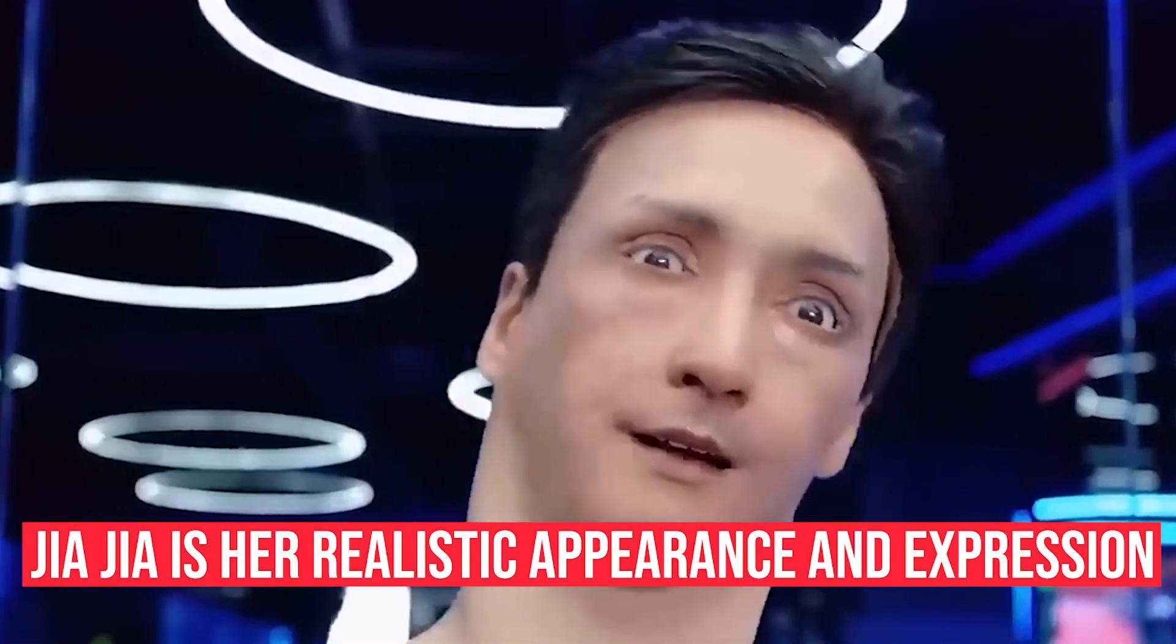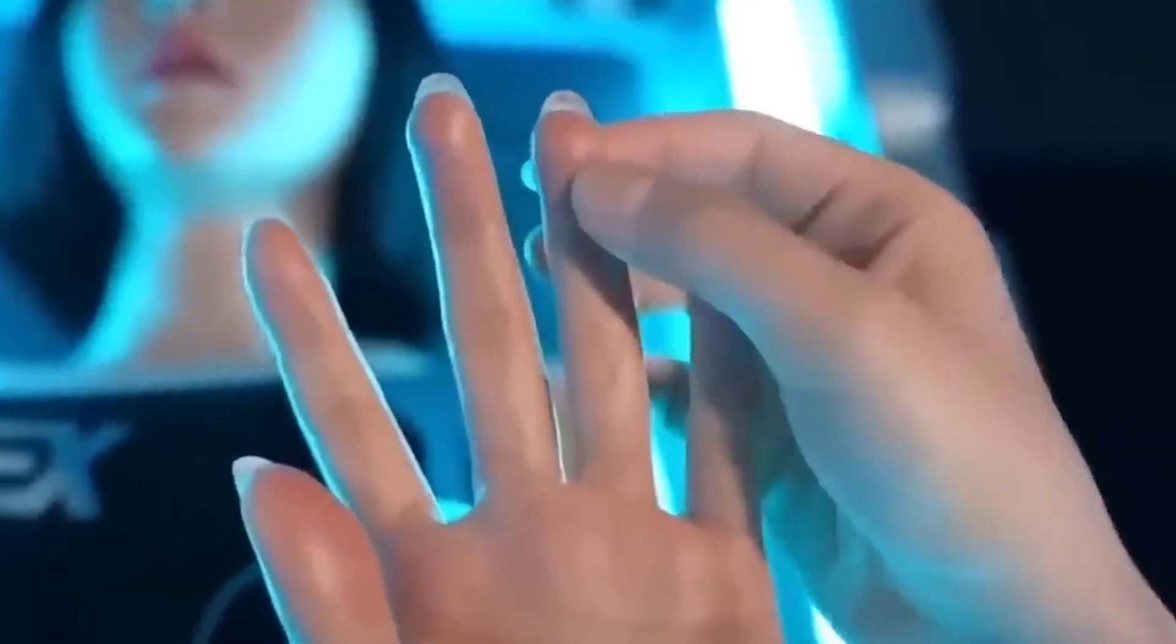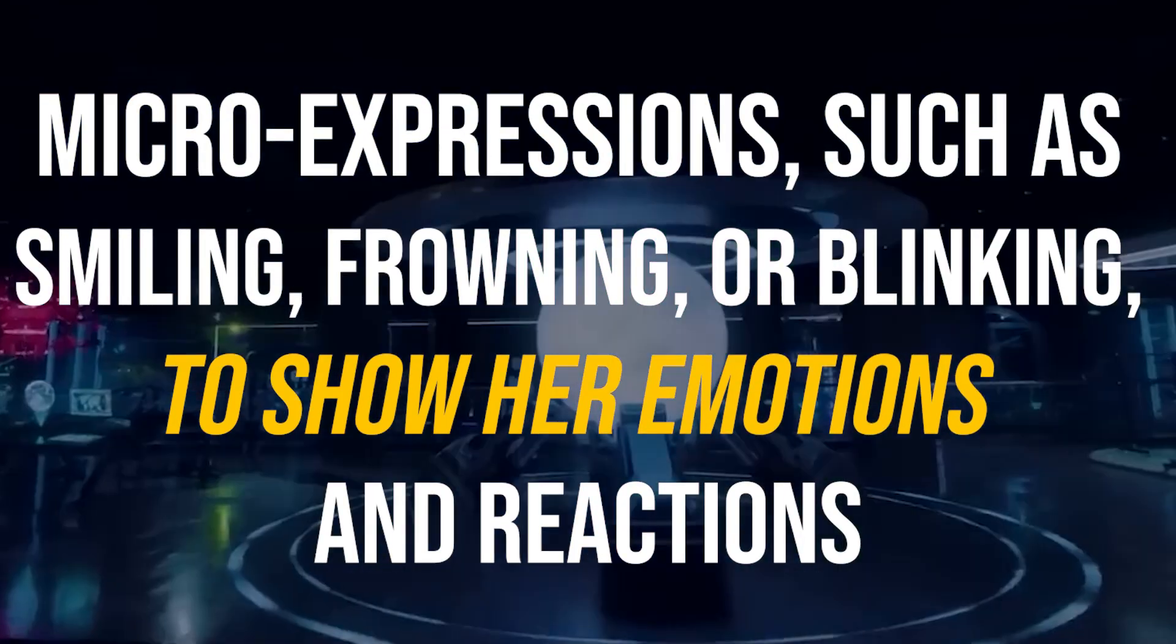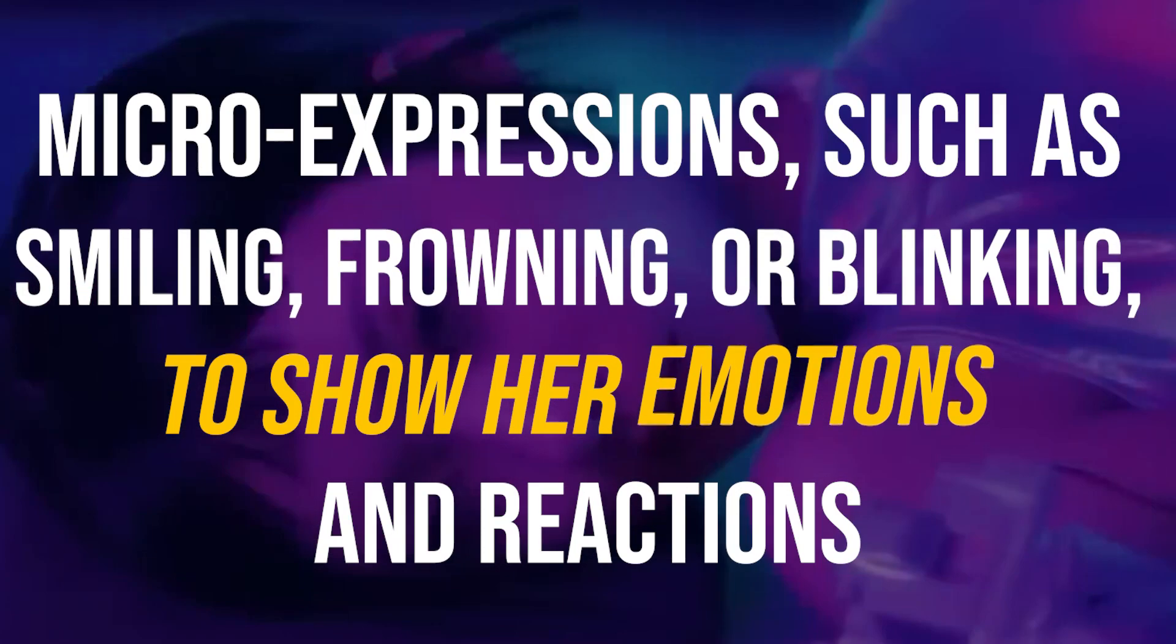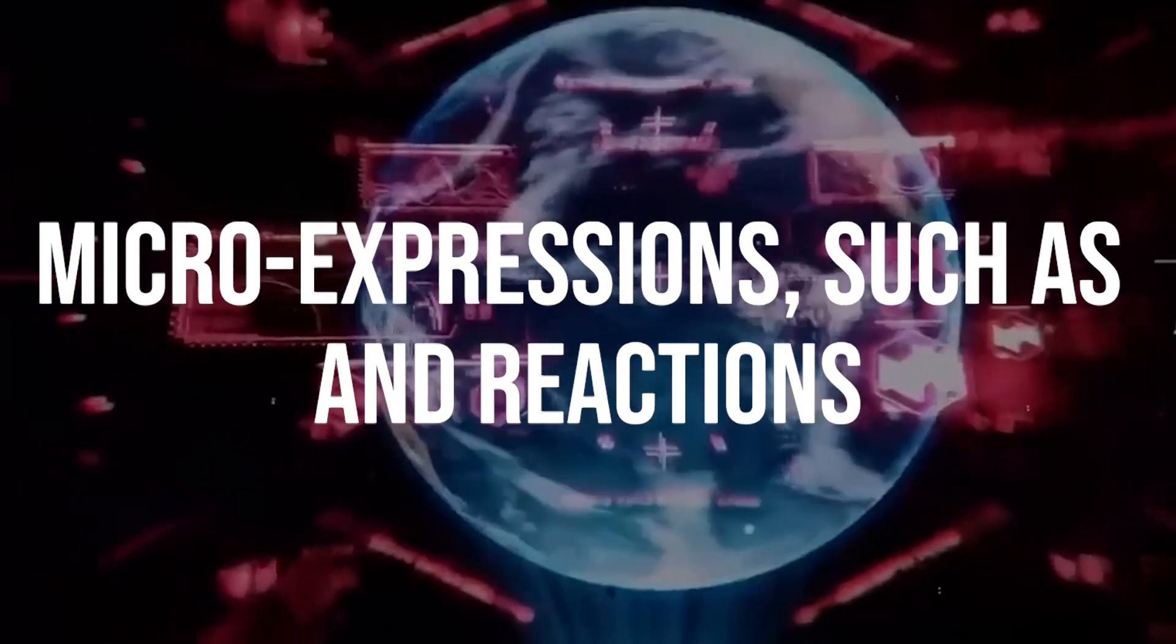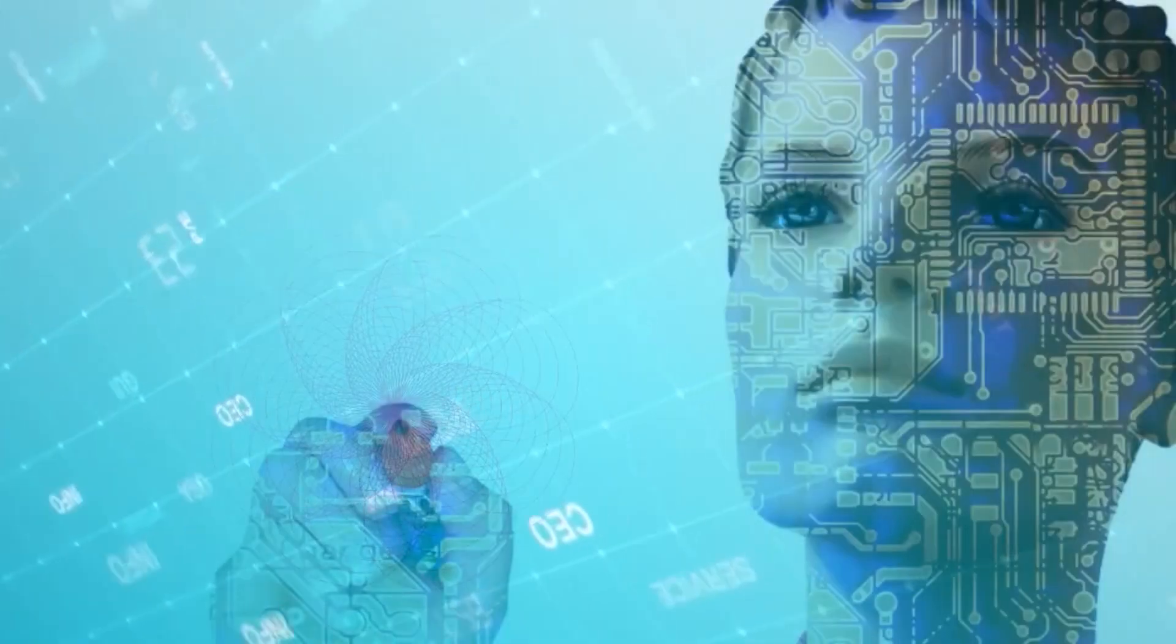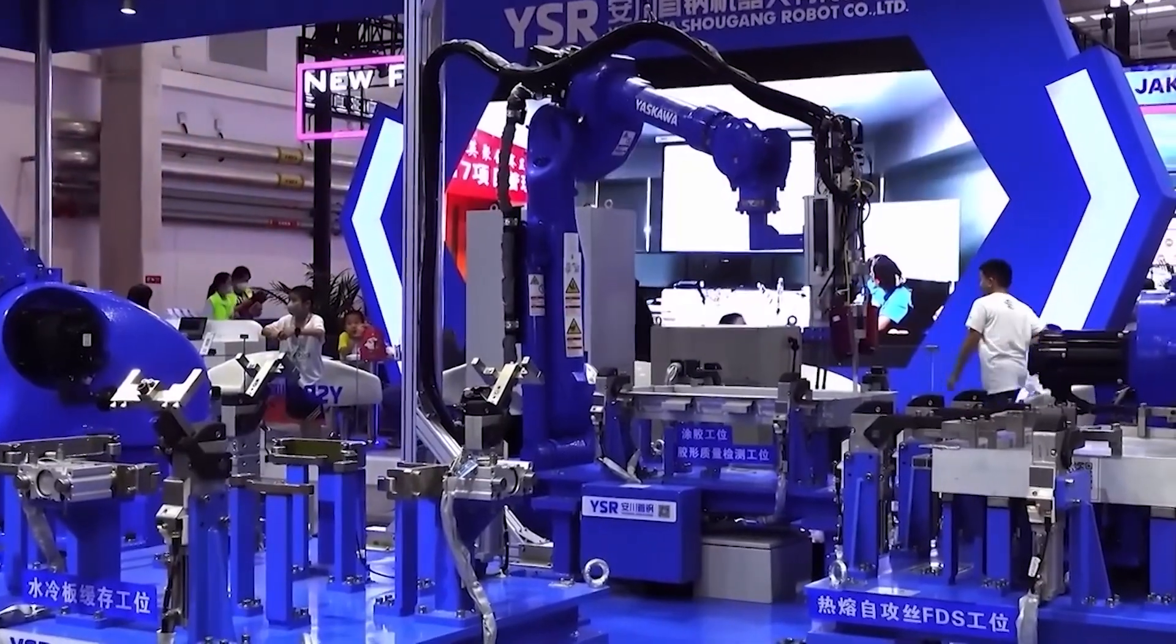One of the features of Jiajia is her realistic appearance and expression. Jiajia looks like a human woman with long hair, delicate skin, and natural facial features. She can also make micro-expressions such as smiling, frowning, or blinking to show her emotions and reactions. Jiajia's realistic appearance and expression are designed to make her more attractive and acceptable to humans, especially those who need social interaction and companionship.